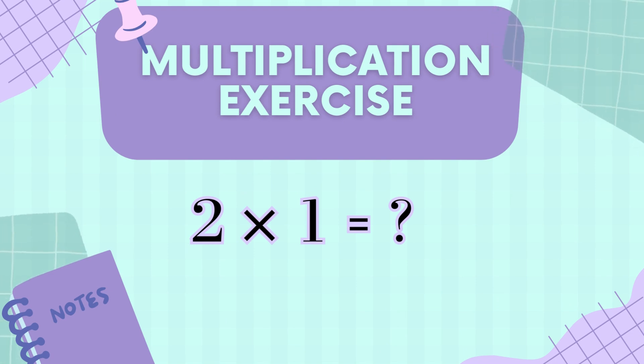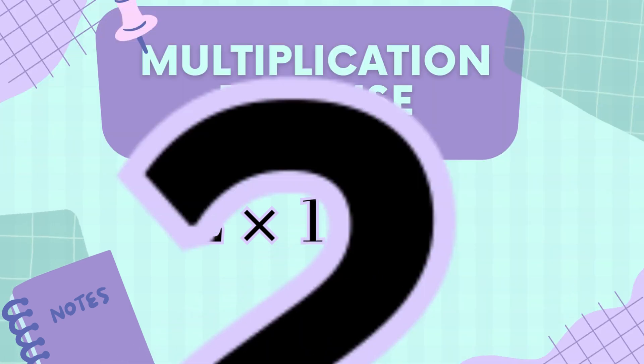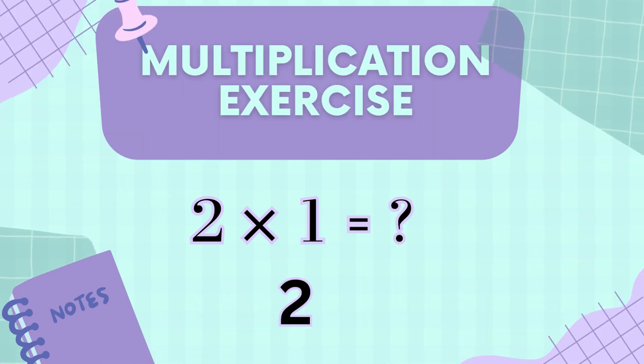Let's take the first question. Two times one equals what? Here is the trick! Think of the number two, and imagine you have just one group of it. That's simply two! Get it! It's that easy!